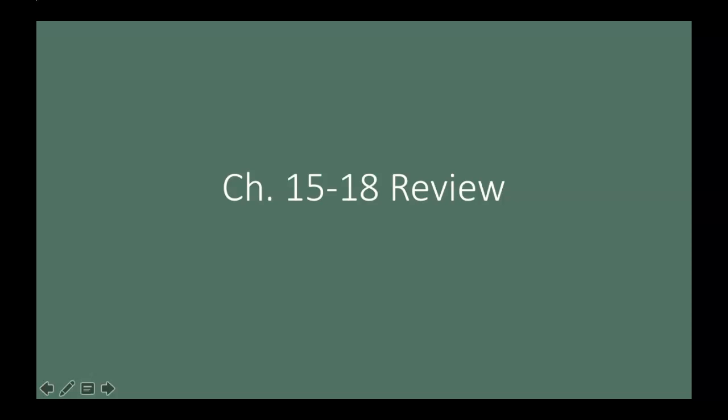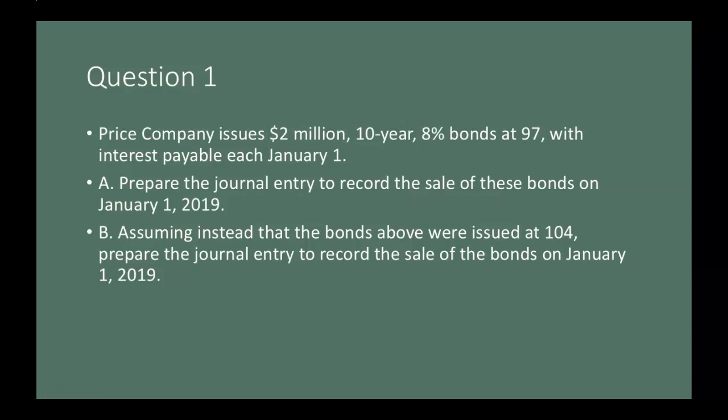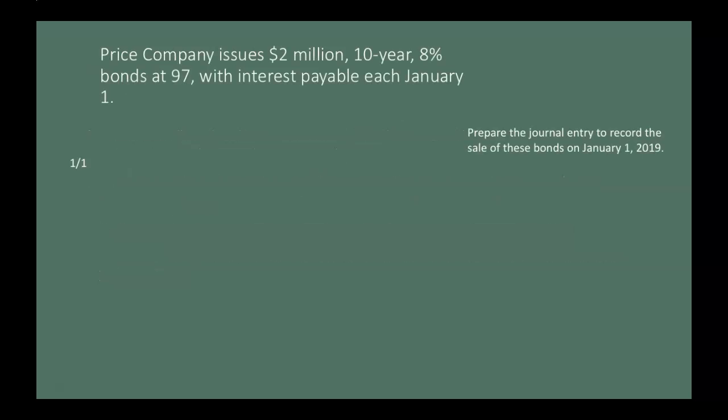Let's review chapters 15 through 18. This first question deals with bonds. Price Company issues a $2 million, 10-year, 8% bond at 97, with interest payable each January 1st. Part A asks us to prepare the journal entry to record the sale of those bonds on January 1st, 2019. Issuing bonds at 97 tells us how much cash we're going to receive. This journal entry will include a debit to cash and a credit to bonds payable. The bonds payable amount is just the face value of the bond — that's our $2 million.